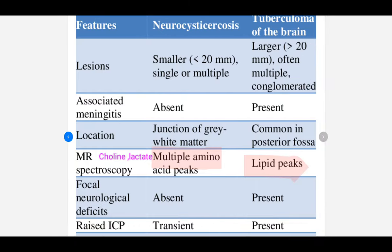Next are the differences between neurocysticercosis and tuberculoma. Neurocysticercosis lesions are smaller while tuberculoma lesions are larger. In tuberculoma, associated meningitis is present. On MR spectroscopy, neurocysticercosis shows choline and lactate (amino acid peak), while tuberculoma shows lipid peaks. Raised ICP and focal neurological deficits are also features of tuberculoma.